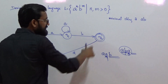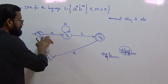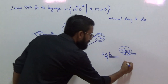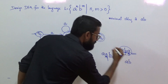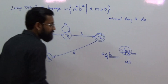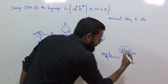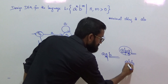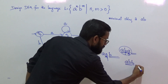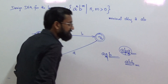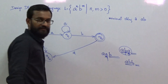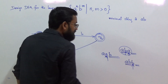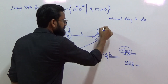Now consider the B transition for q2. The minimal string consumed to reach q2 from q0 is AB. From state q2, consuming B gives the current string ABB. The question is what remaining minimal string makes this valid — and ABB is already a valid string. So this B transition must remain in the same state q2.